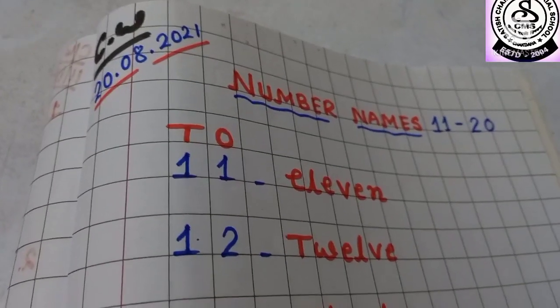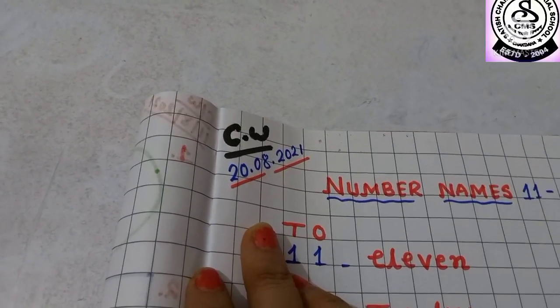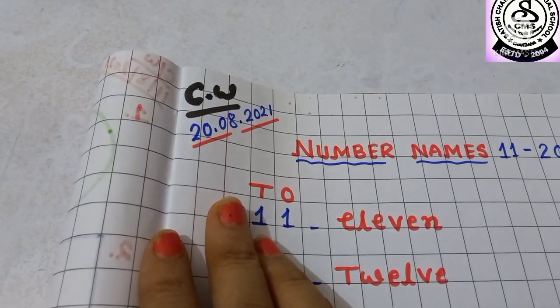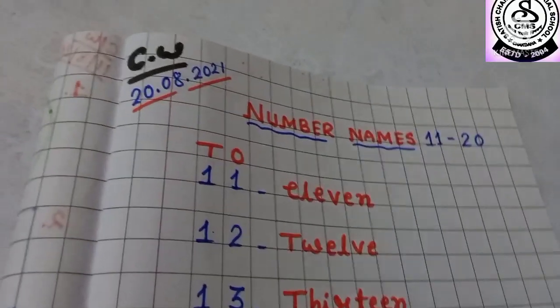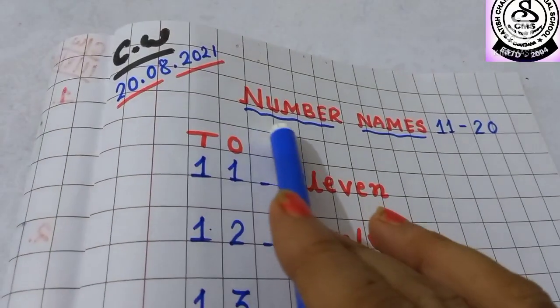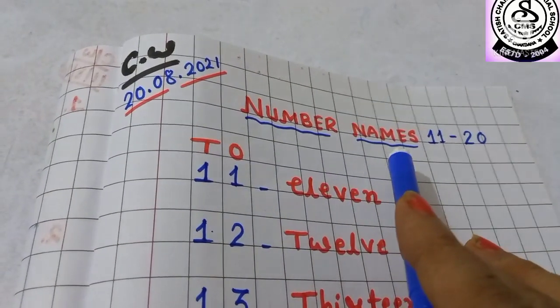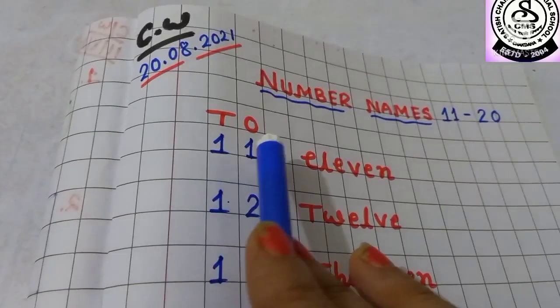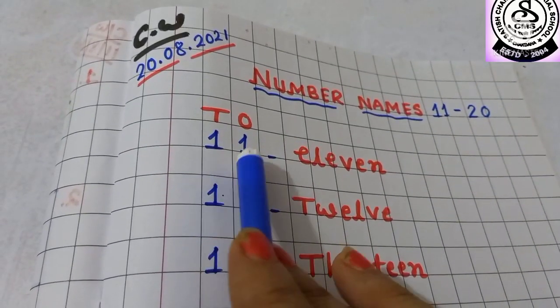Please everybody take your school copy and write down CW means classwork. And please write the date also, 20 dot 08 dot 2021. For the heading, I have written number names. N-U-M-B-E-R, N-A-M-E-S. Number names from 11 to 20. And then I have written here, 1s and 10s. And under the 10s 1s, I have written 11.